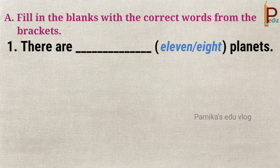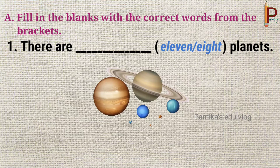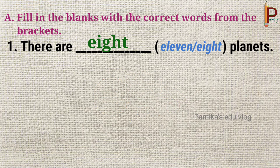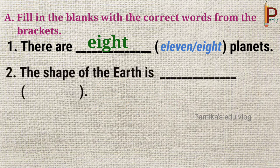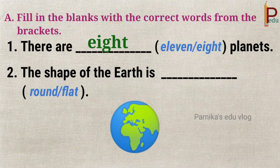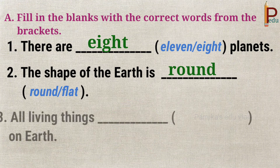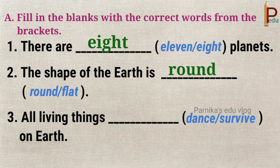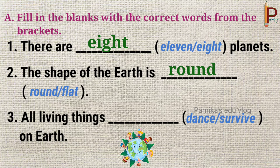First, there are dash planets. Answer: eight. Second, the shape of the earth is dash. Answer: round. Third, all living things dash on earth. Answer: survive.